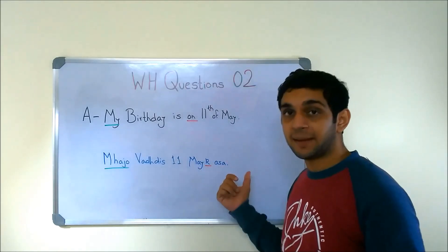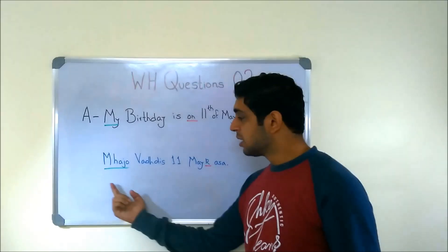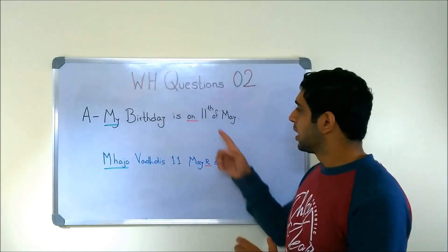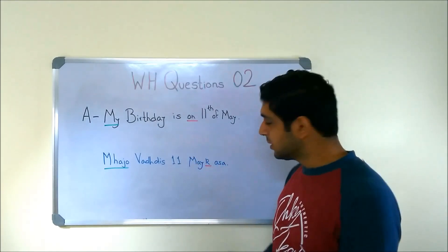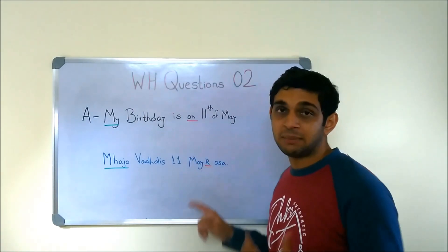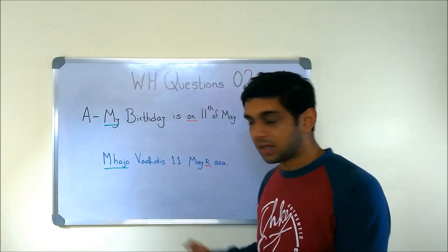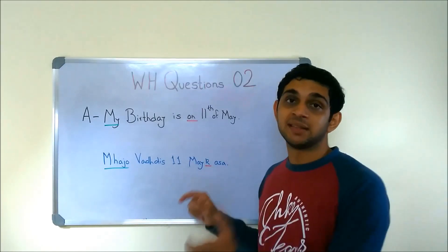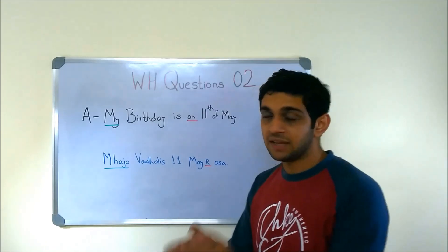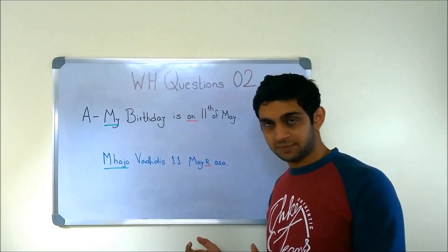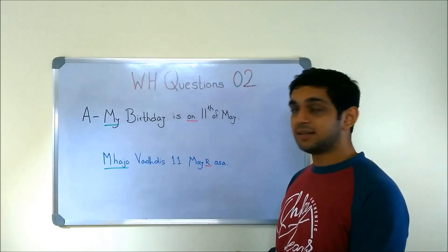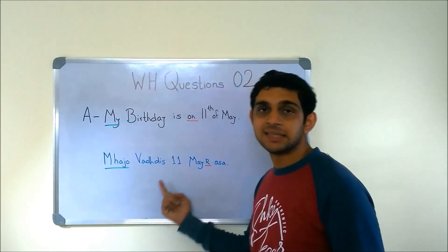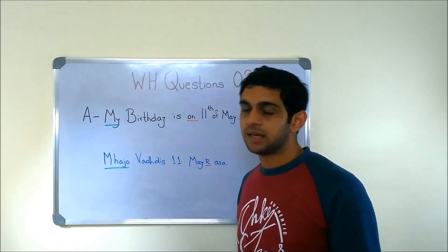The answer: 'My birthday is on the 11th of May.' MOZA VAR DIS AKRA MEEK ASA — MOZA is 'my'. On 11th is AKRA MEEK; if you add KUR to ME it becomes MEEK, meaning 'on'. If you want to say 'in', you add T to it. Here in this sentence MEEK suits: MOZA VAR DIS AKRA MEEK ASA.